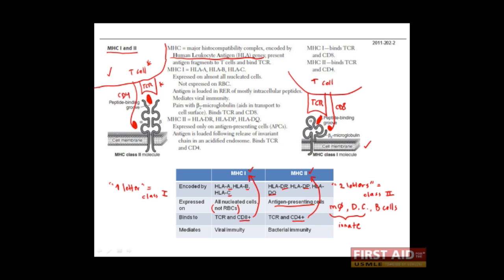If this is our T cell receptor, what cell is this? Right, this cell membrane must belong to an antigen presenting cell. That is, a macrophage, a dendritic cell, or a B cell.